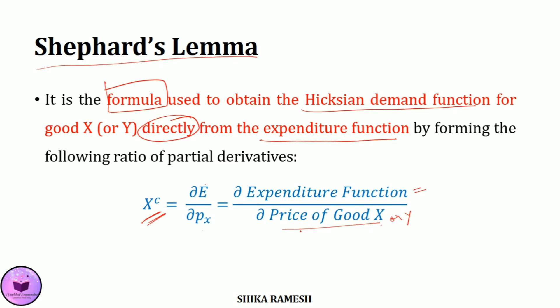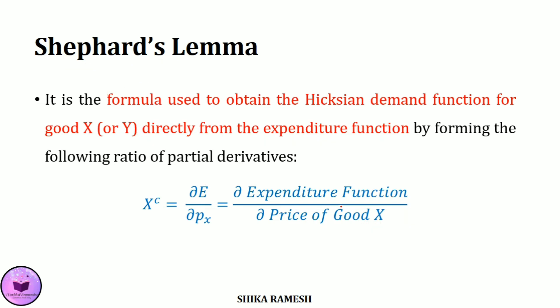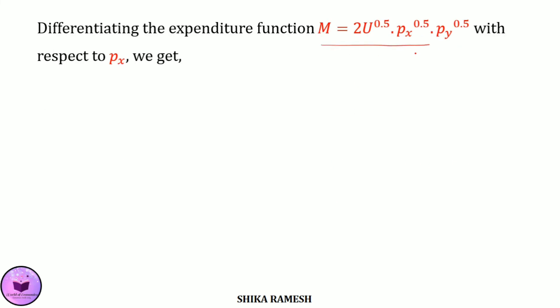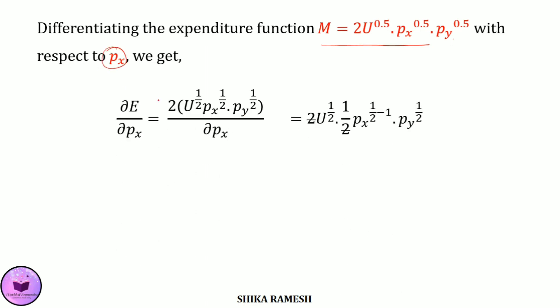The expenditure function is equal to 2U raised to 0.5 multiplied by Px raised to 0.5 multiplied by Py raised to 0.5. Differentiating with respect to Px: del E by del Px equals 2U raised to 1/2 multiplied by Py raised to 1/2, differentiated with respect to Px. Applying the power rule, this becomes 2U raised to 1/2 multiplied by one-half times Px raised to 1/2 minus 1, multiplied by Py raised to 1/2.